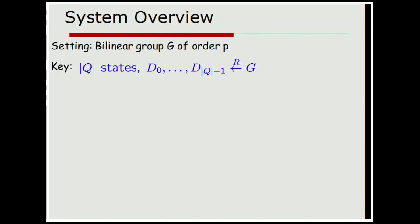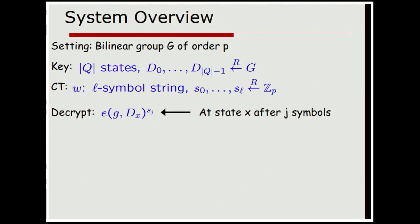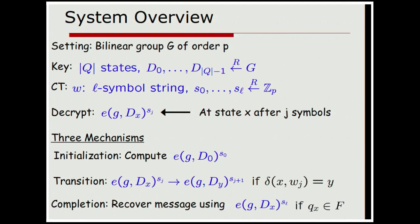So the setting that we're going to work in is a bilinear group G of prime order P. There's going to be Q state, so if a key has size of Q states, we're going to pick Q random group elements D sub 0 through D sub Q minus 1. A ciphertext will be an L simple string for some value L, which will change with the ciphertext. And here, when I'm encrypting, I'm going to pick random exponents S0 through S sub L. Now, the interesting part for decryption is decryption is going to be like an iterative process that follows the execution of the DFA. And if someone over here, let's say, was decrypting and I kind of, you know, grabbed them in the middle of their process and looked at what they were doing, what I would find is that they would have computed some intermediate value, E, that's the bilinear map function, of G, D sub X raised to the S sub J, and that means that when they're decrypting, they're able to get this if they're in state X after J symbols. So this is, when you're doing this iterative decryption, this is, being able to get this represents that, this computation on the DFA.